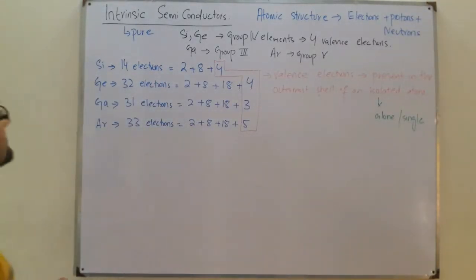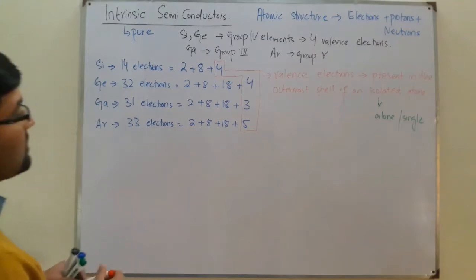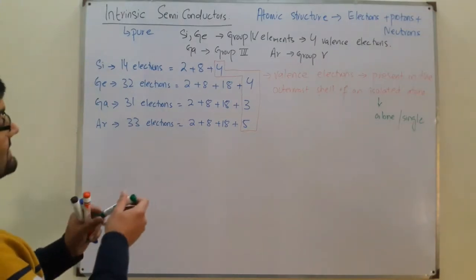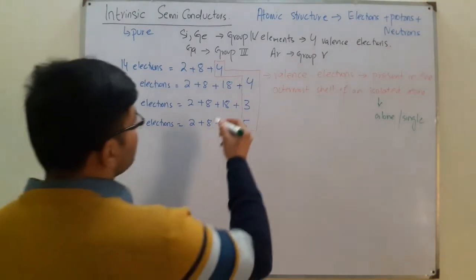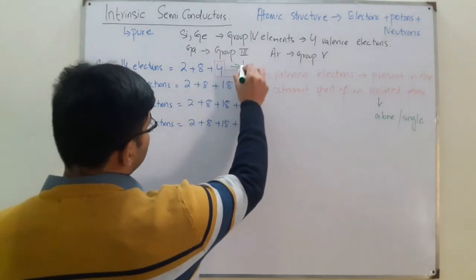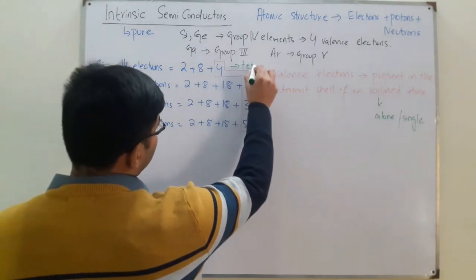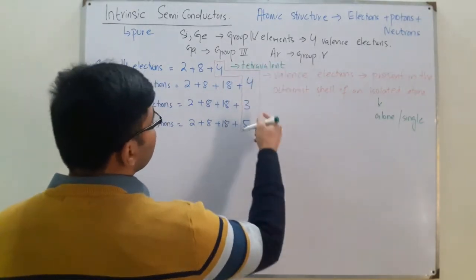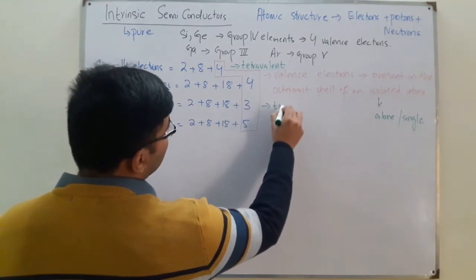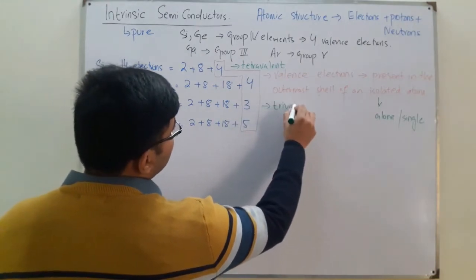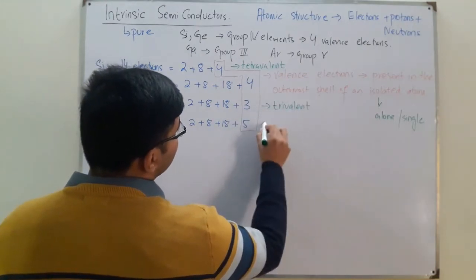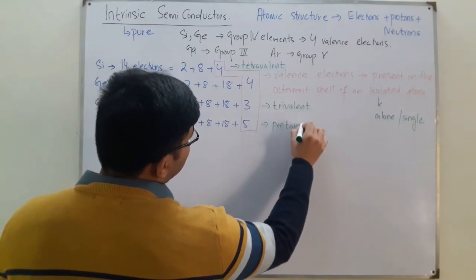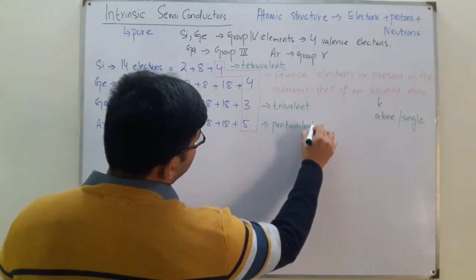Atoms that have 4 valence electrons in the outermost shell are called tetravalent atoms. Those with 3 valence electrons are called trivalent. And the ones with 5 valence electrons are called pentavalent atoms.